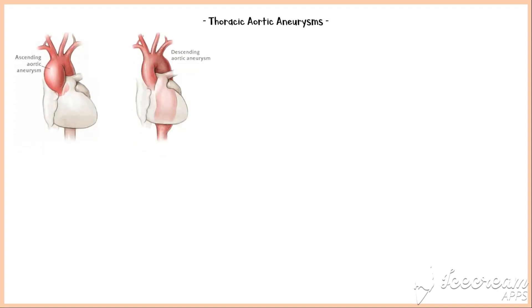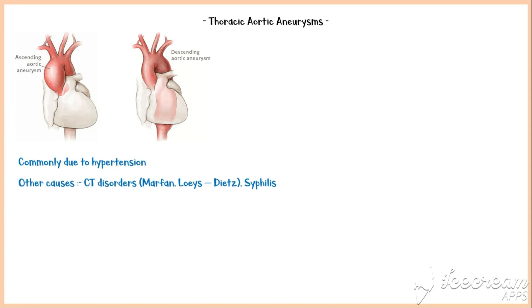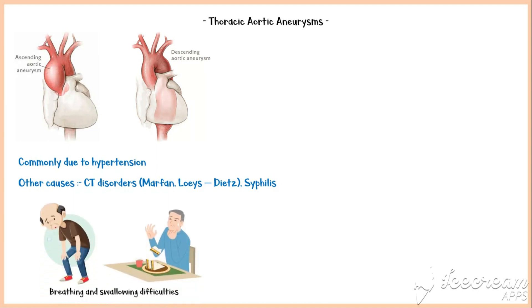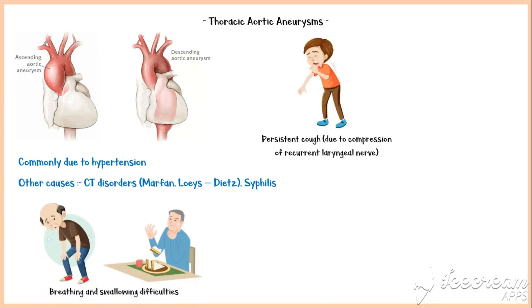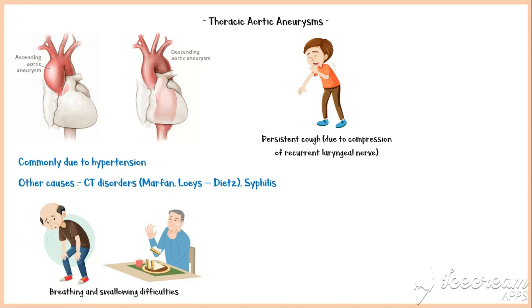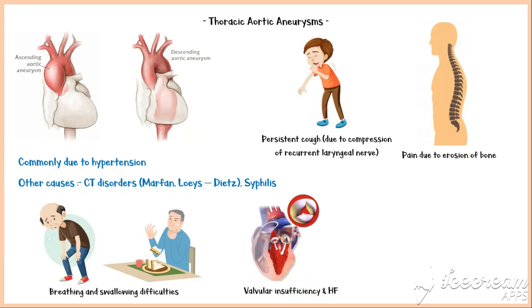Thoracic aortic aneurysms can occur in the ascending aorta as well as in the descending aorta. They occur commonly due to hypertension. Other causes include connective tissue disorders and syphilis. Unlike abdominal aortic aneurysms, thoracic aortic aneurysms can present with symptoms due to their pressure effects on adjacent structures, including breathing and swallowing difficulties, persistent cough due to compression of the recurrent laryngeal nerve, pain due to erosion of bone, and valvular insufficiency and heart failure.